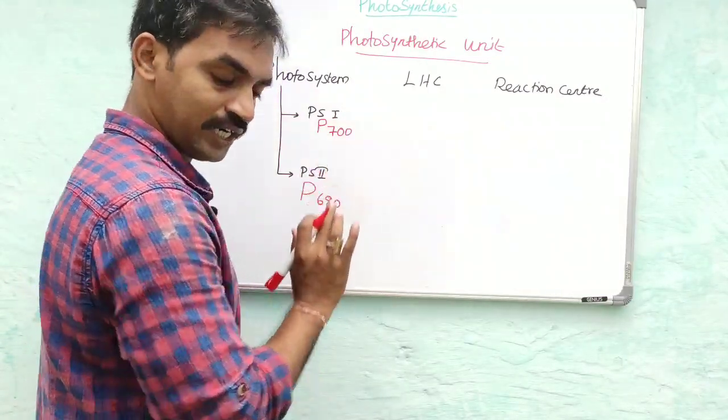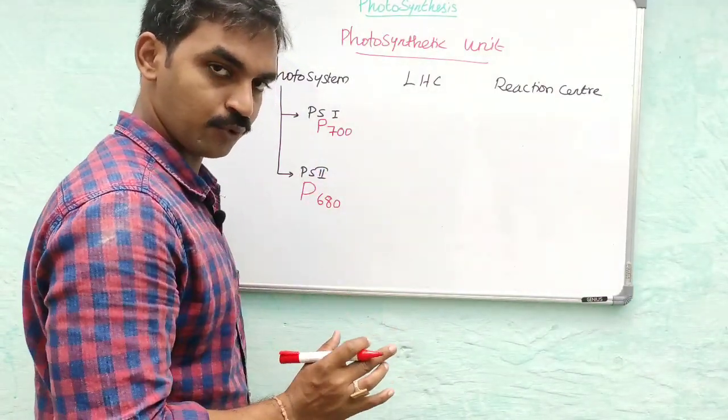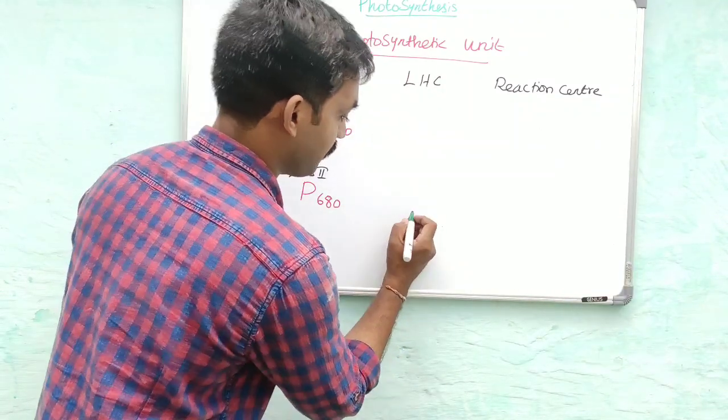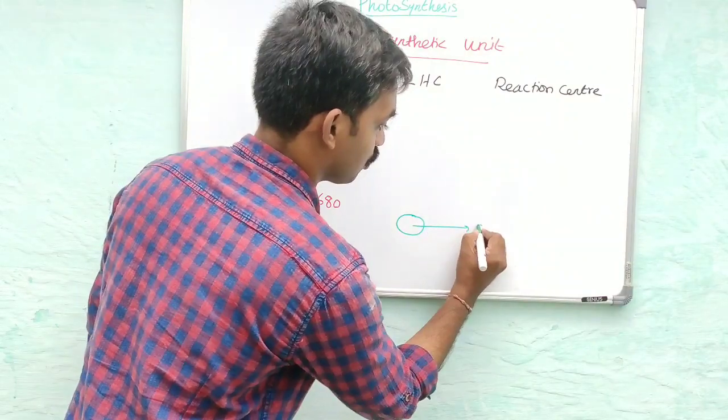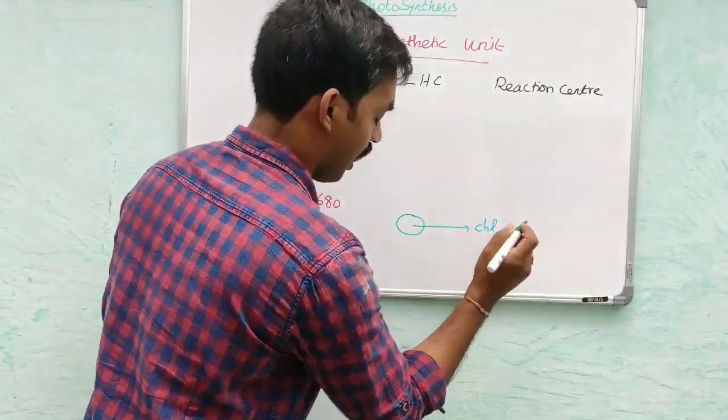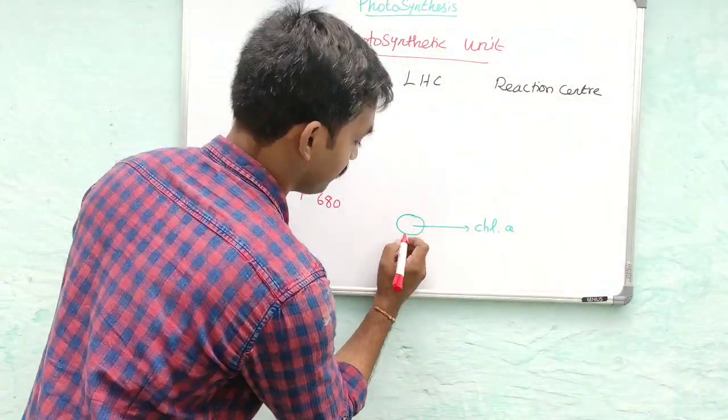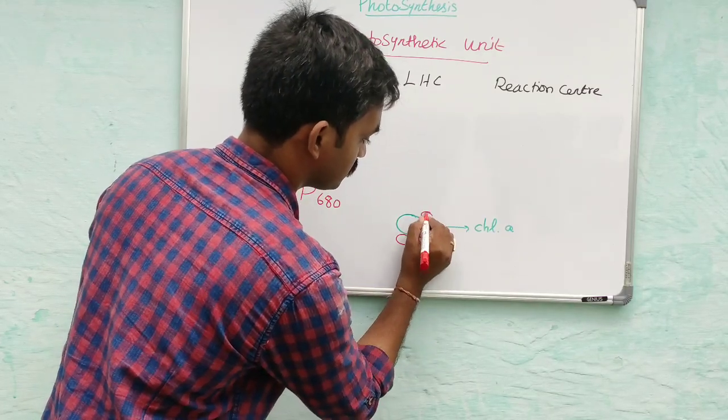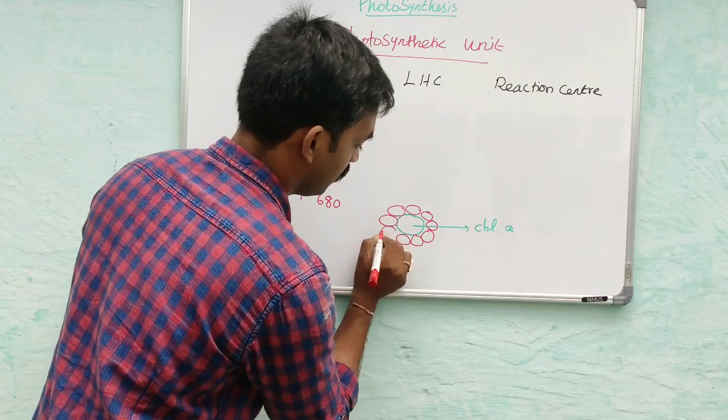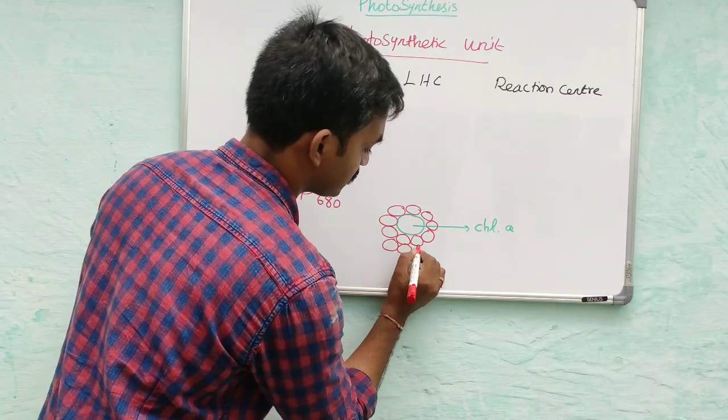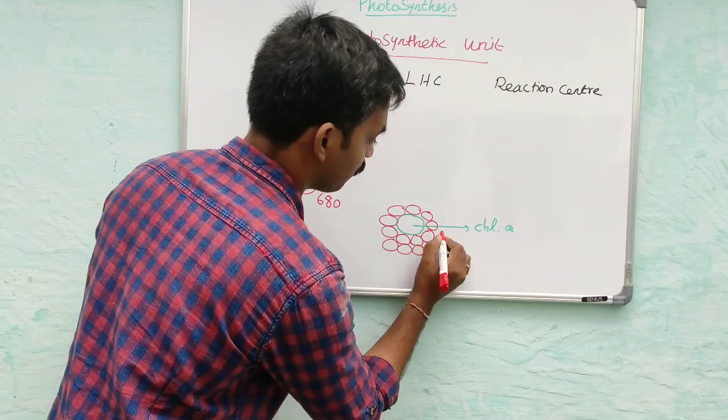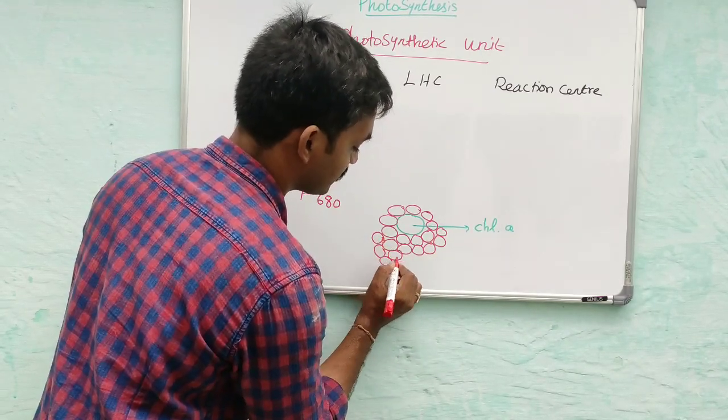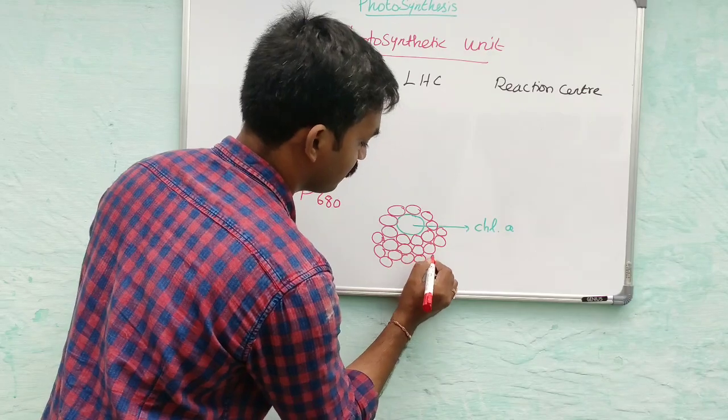In both PS1 and PS2, the structure is similar. At the center is a chlorophyll a pigment, and around it are several accessory pigments. These accessory pigments are mostly carotenoids, xanthophylls, and phycocyanin.